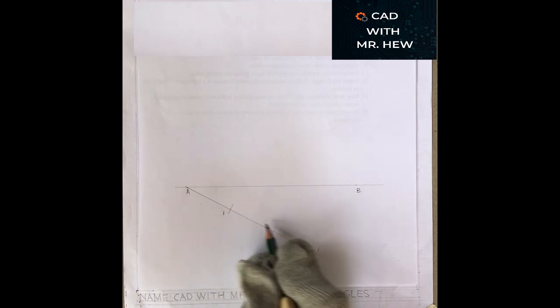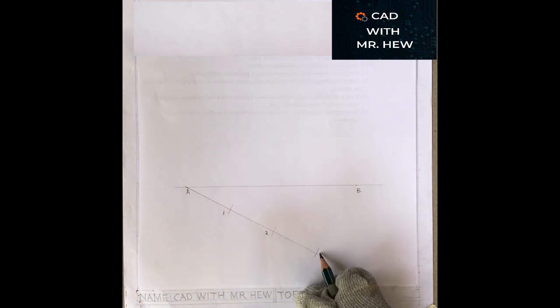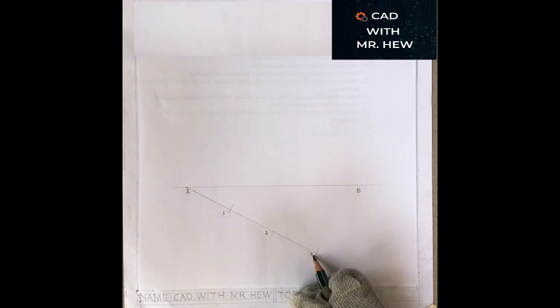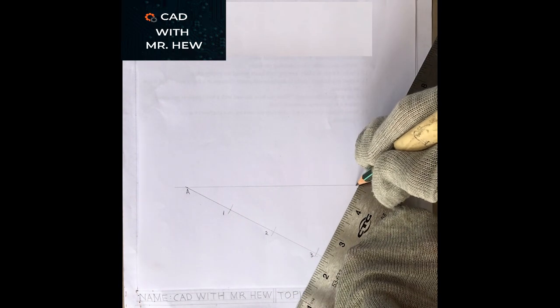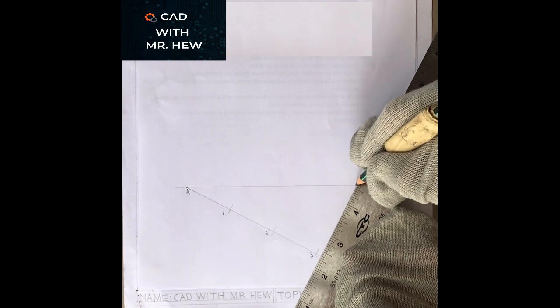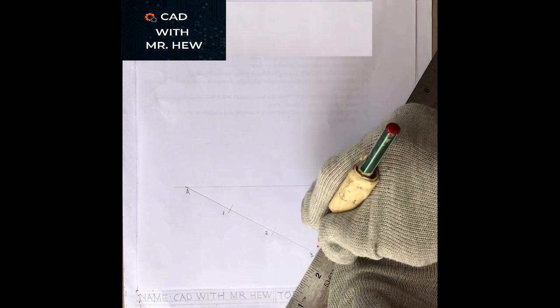We are going to label the first arc 1, the second arc 2, and the third arc 3. Then we are going to use our ruler and pencil to draw a line from 3 to B.